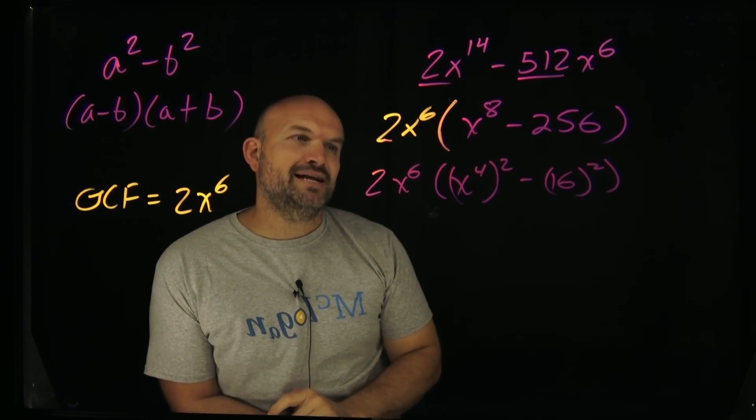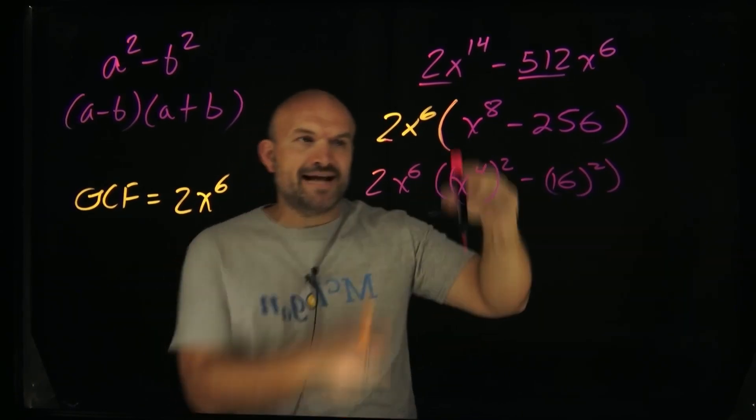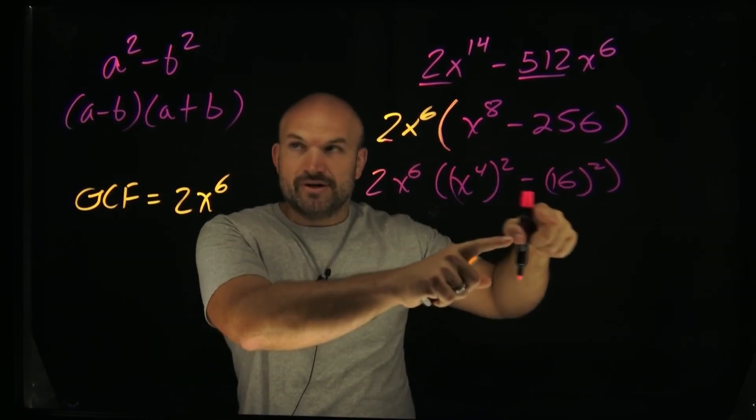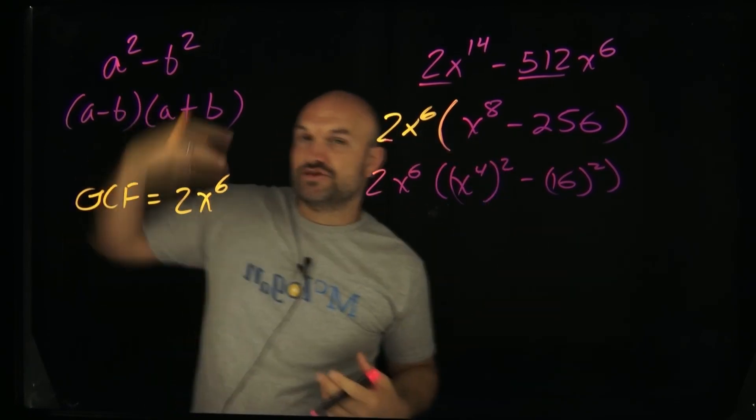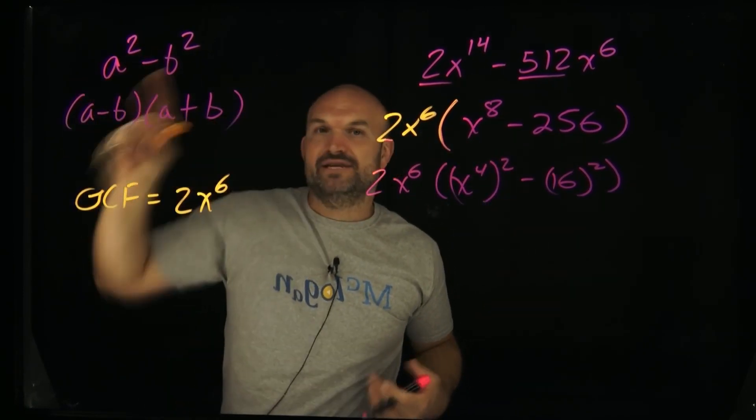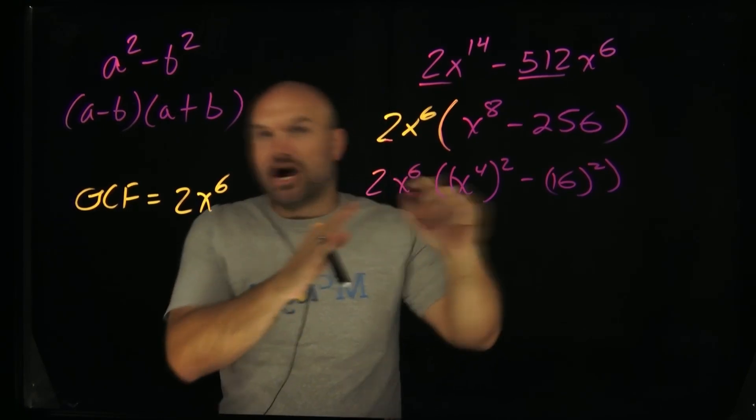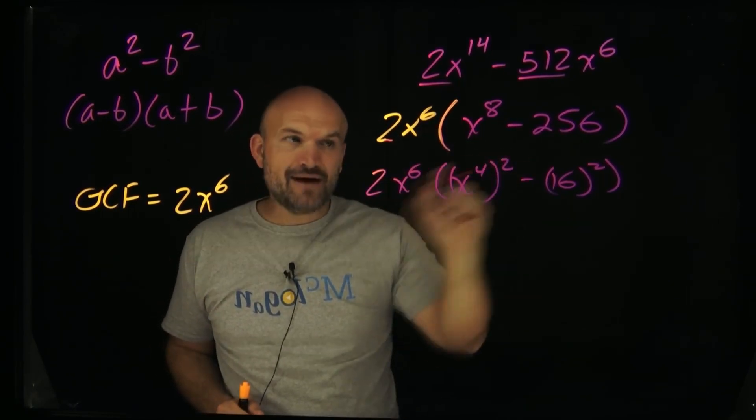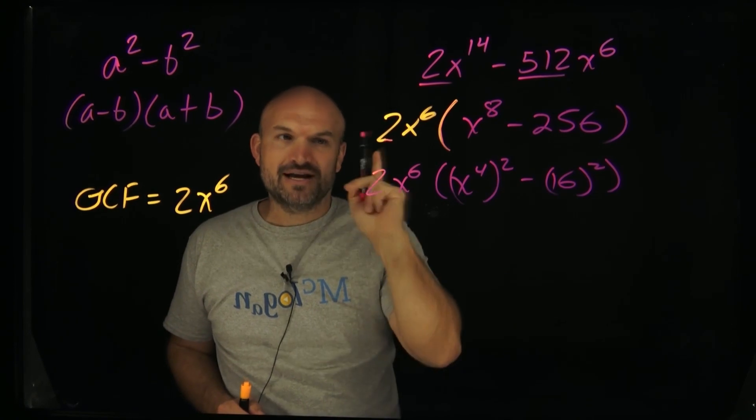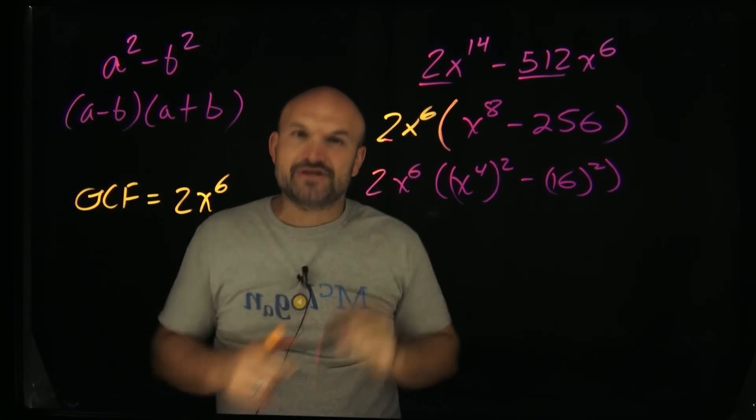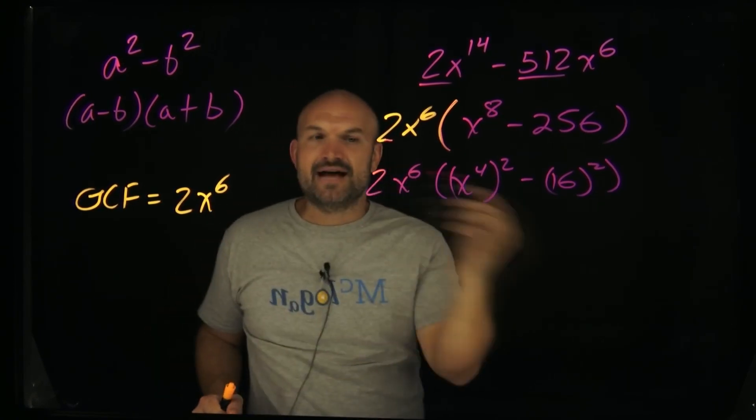And hopefully you recognize that that can be written as 16 squared. So I want you to recognize how I wrote this. I rewrote it as a square number minus another square number. Because when I recognize something as a square number minus another square number, I can now follow the difference of two squares. This GCF is always going to remain on the outside here. But now we're going to be able to factor a difference of squares for the first time. And I'm just going to leave that 2x to the 6th on the outside.